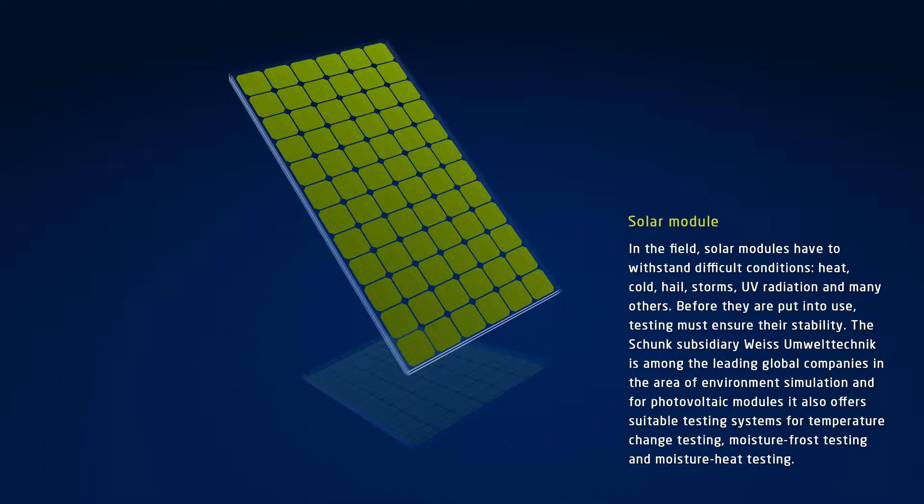For this reason, they must be tested first to make sure that they can handle it. The Schunk subsidiary, Weiss Umfeldtechnik, offers suitable testing systems for this purpose. These systems can be used to carry out temperature change testing, moisture frost testing and moisture heat testing.